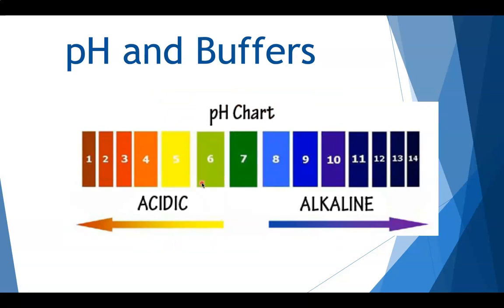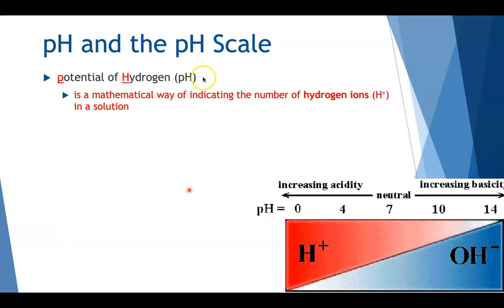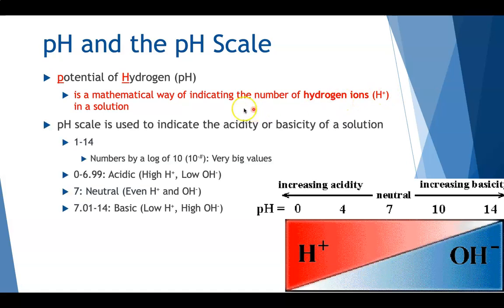So pH and buffers, this is important because pH plays a major role in how different substances interact with each other. So the pH actually stands for potential of hydrogen. And this is just a mathematical way that we use to be able to identify the number of hydrogen ions in any solution. So H+, anything that's hydrogen ion in a solution, we want to use that to determine the pH. Because of that, we have this scale called a pH scale. And this scale will help us determine how acidic something is or how basic a solution will be.